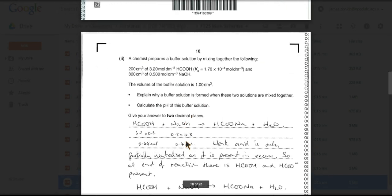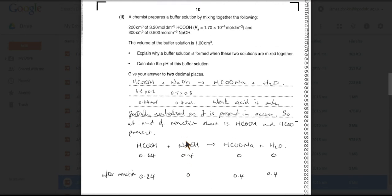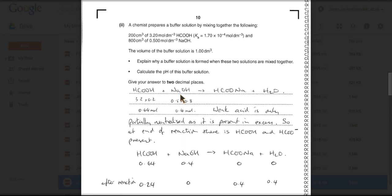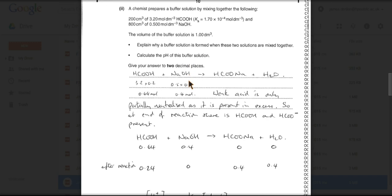And then the final part of this question is a calculation. Chemist prepares a buffer by mixing together. So we've got a volume and a concentration of methanoic acid, given the Ka. Volume, concentration of sodium hydroxide. Again, they've been quite nice. The total volume adds up to one decimetre cubed. That'll come in handy. Explain why a buffer is formed when these two solutions are mixed. Calculate the pH of the buffer to two decimal places.